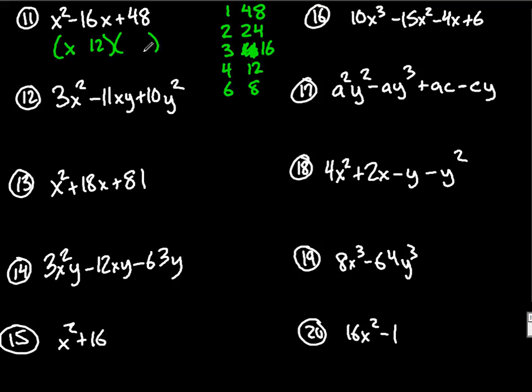So x with 12, x with 4. What we need, the bigger number, it's got to have the sign in front. Negative times what gives you positive, it's also negative.